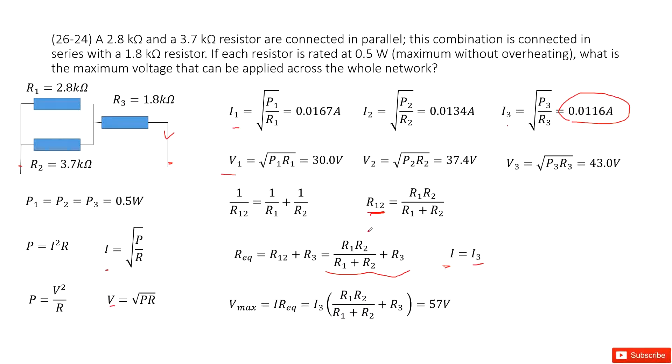Finally, the maximum voltage across the whole network should be the current I times R equivalent. So this I is just I3 times this term. And then we put all the given quantities, get the answer there, 57 volts. Thank you.